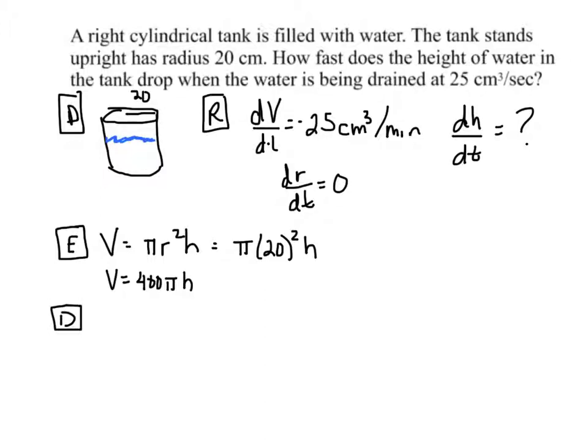So, the derivative. Derivative of V is dV/dt. 400 pi dh/dt.